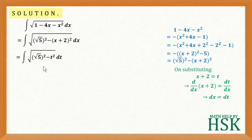Now I'm going to apply this formula for integration: the integral of square root of a squared minus x squared with respect to x is equal to 1 by 2 times x into square root of a squared minus x squared plus a squared upon 2 into sine inverse of x upon a plus c.